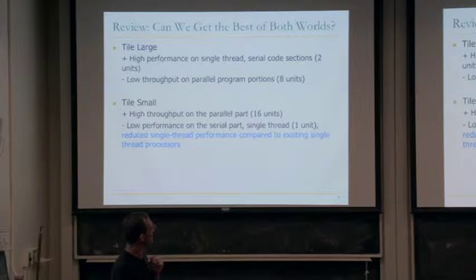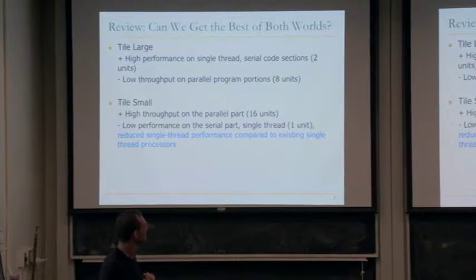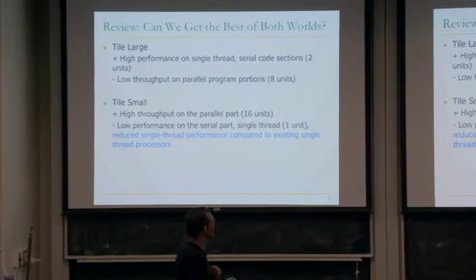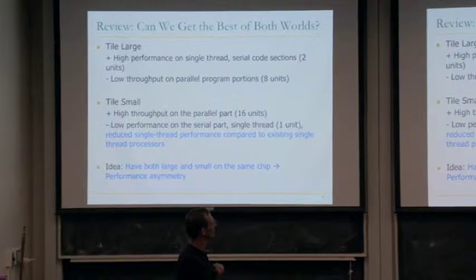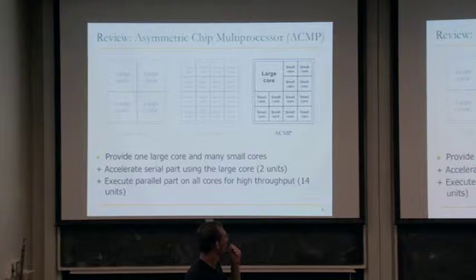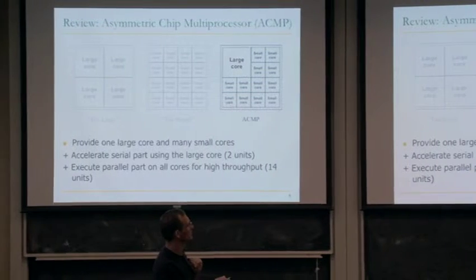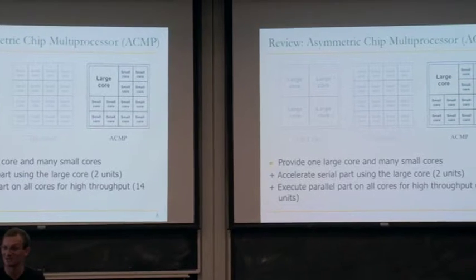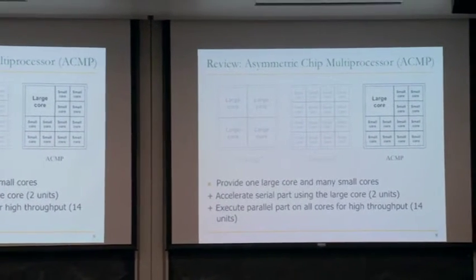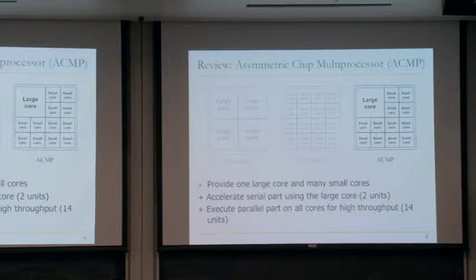This is a review. We were talking about two approaches to designing multi-core: a large approach where you put large cores together, and a small approach where you put many small cores together. None of them achieve the best of both worlds. So if you have both, you can get performance asymmetry, which enables the best of both worlds — you can execute the serial part of the code on the large core and the parallel part on all of the small cores. With multi-threading on the large core, you can get as good parallel performance as the all-small-core design.